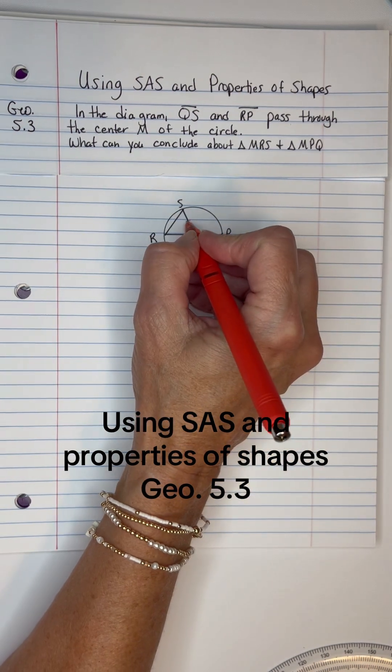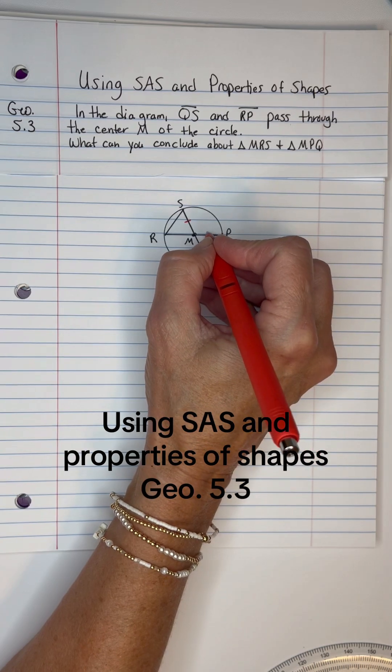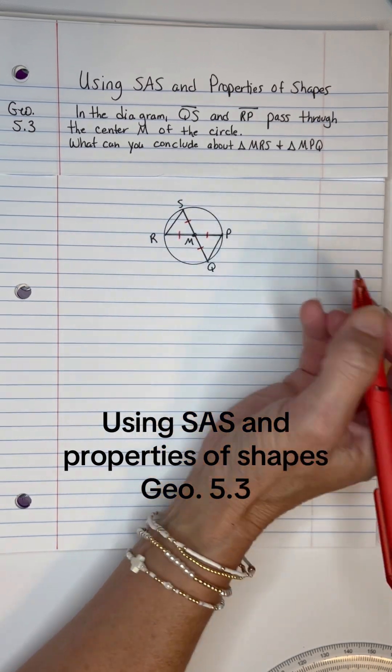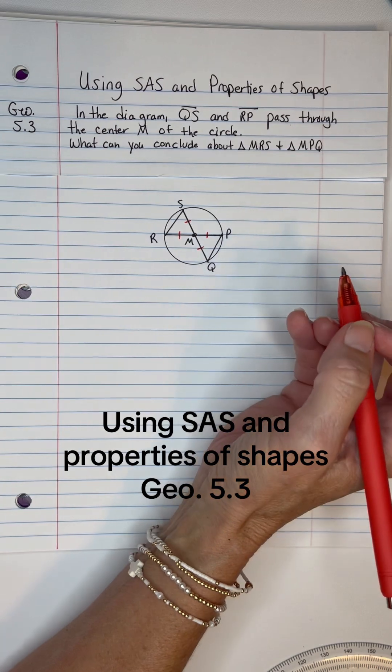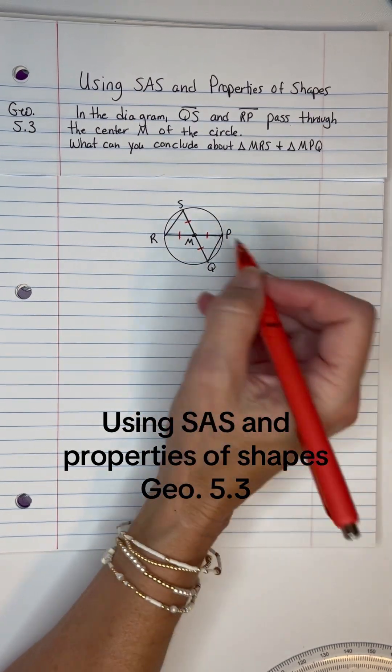we can mark MS. It'd be the same size as MP and MQ and it would be the same size as MR because all the radii will be congruent. They're the same distance from the end of the circle.